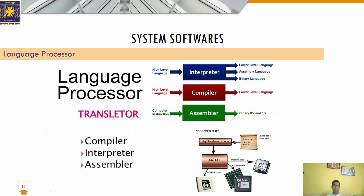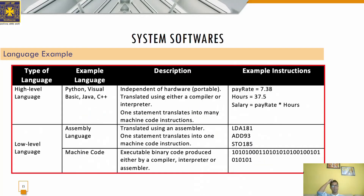Machine language is used to develop system software crucial to a computer system. The disadvantages are: all instructions are written in binary numbers which are difficult to understand by end users. If an error occurs, each and every step has to be rewritten. Reuse of previously written programs in machine level language cannot be performed without changing the address of the instructions and data. Machine level language is a challenging and complex programming language to learn, memorize, and execute.